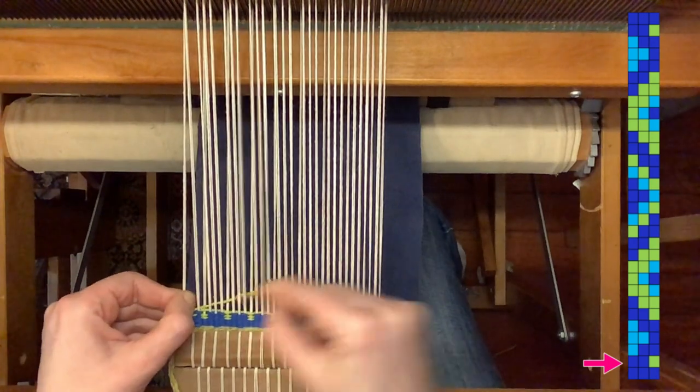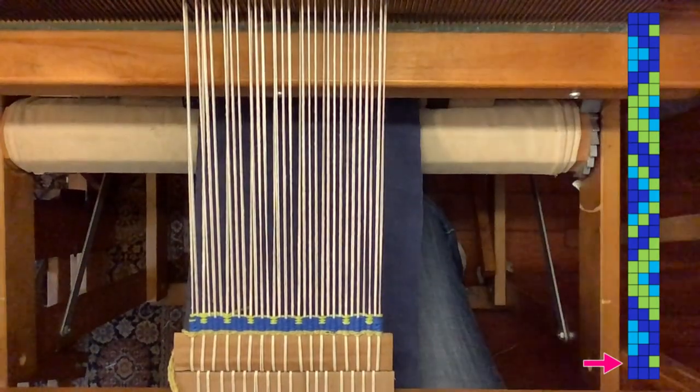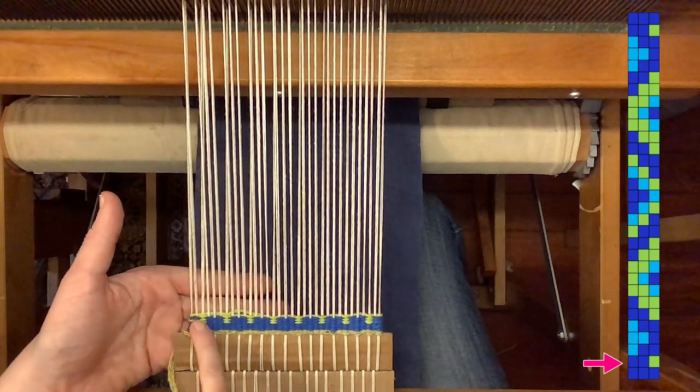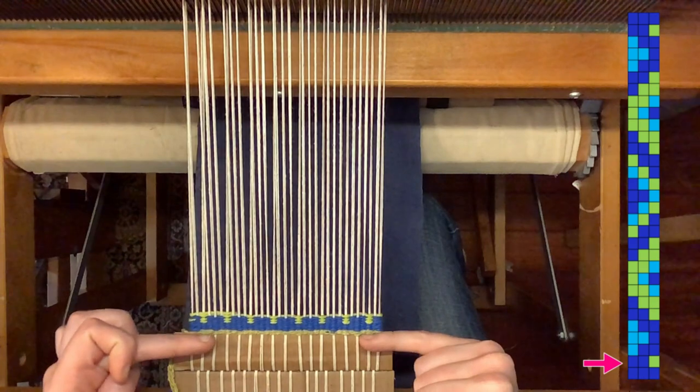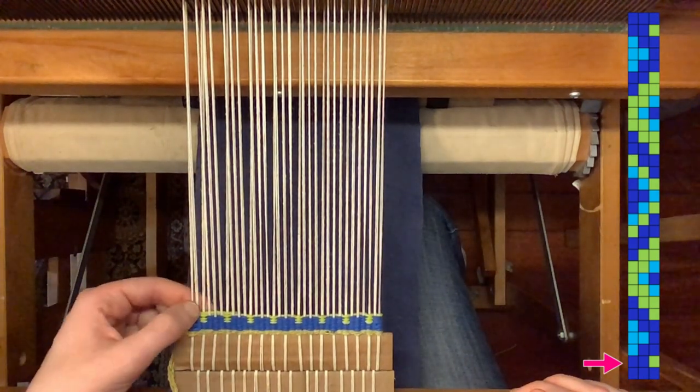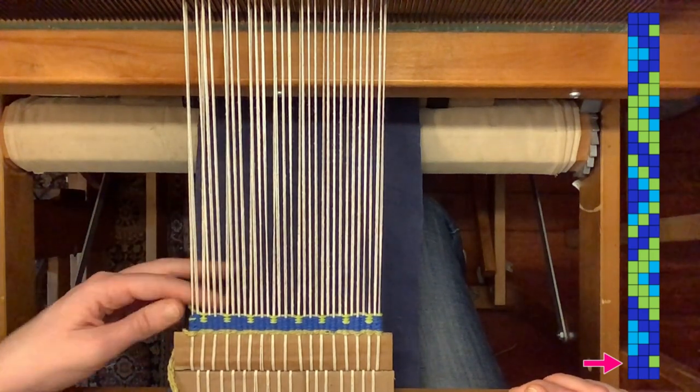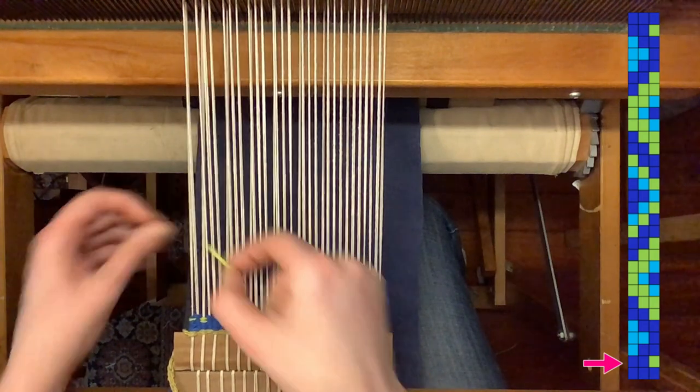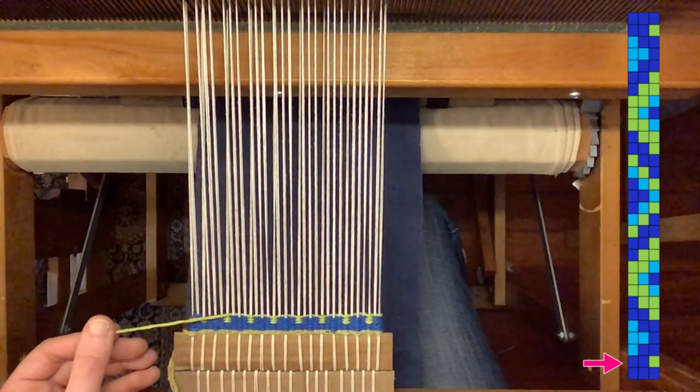I am using floating selvages today. Now you can see that there is some buildup here where I have two strands of the green, and as you continue adding and cutting colors through the whole pattern that will tend to build up at the edges. So if you want to avoid that extra buildup for edges as tidy as possible, I'm actually going to unweave it just here at the edge and taper my yarn.